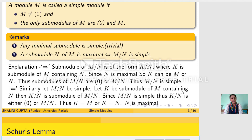For example, let us take Q, the ring of rational numbers. We know that Q is a module over Q and the submodules of this module will be just the ideals of Q. Now Q being a field has only two ideals, namely 0 and Q. So if we consider Q as a module over itself, then it is a simple module.